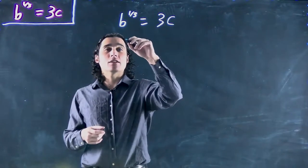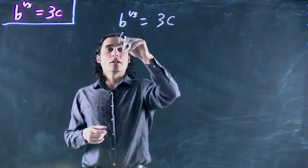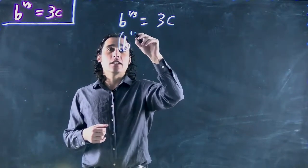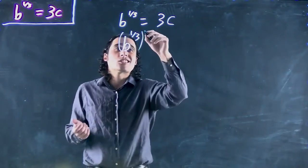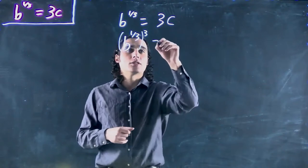Well, if I want to get b on its own, then I'm going to put both sides to the inverse power. Inverse of 1 over 3 is 3 over 1 or just 3. I'm cubing both sides in other words.